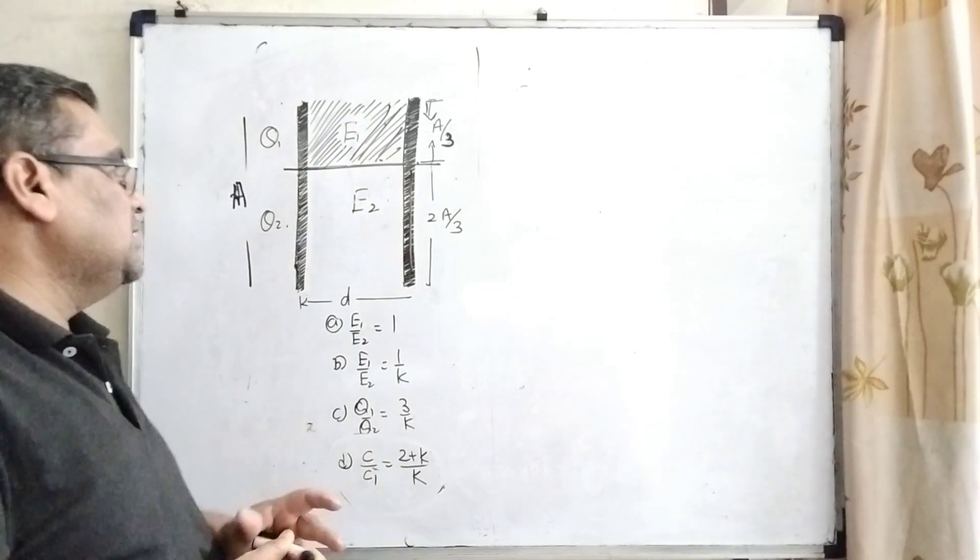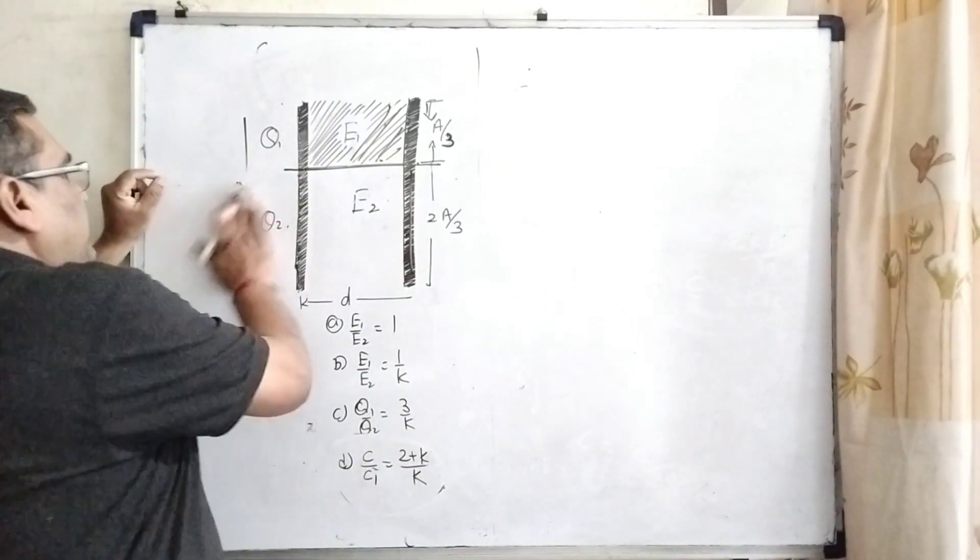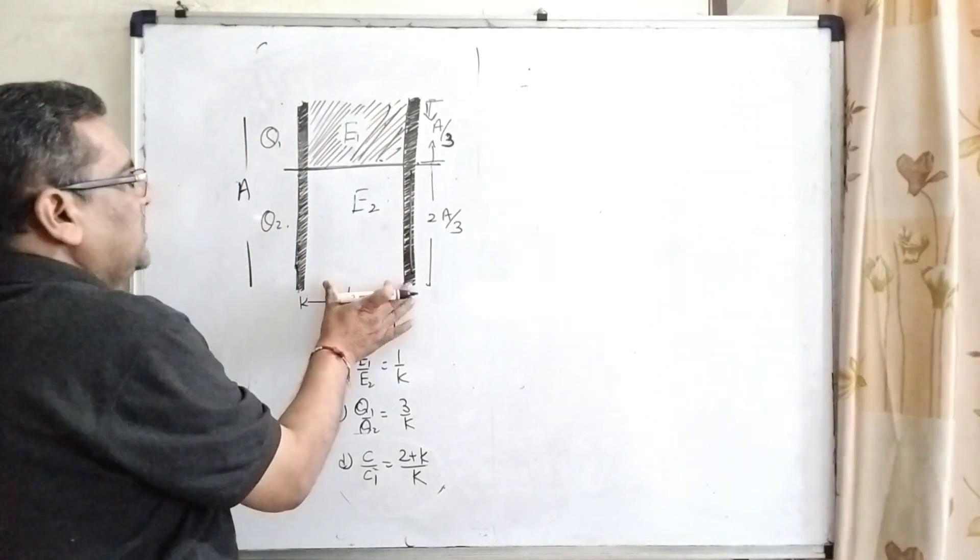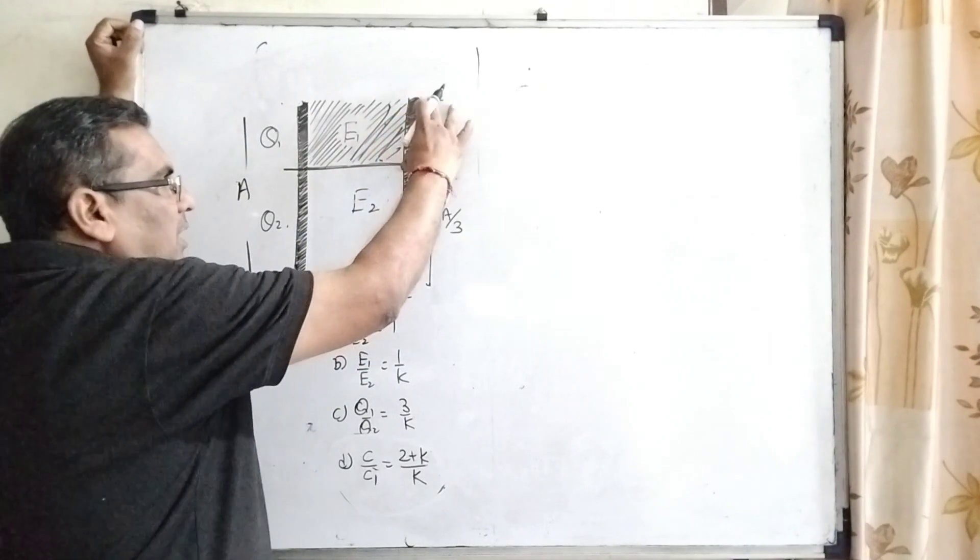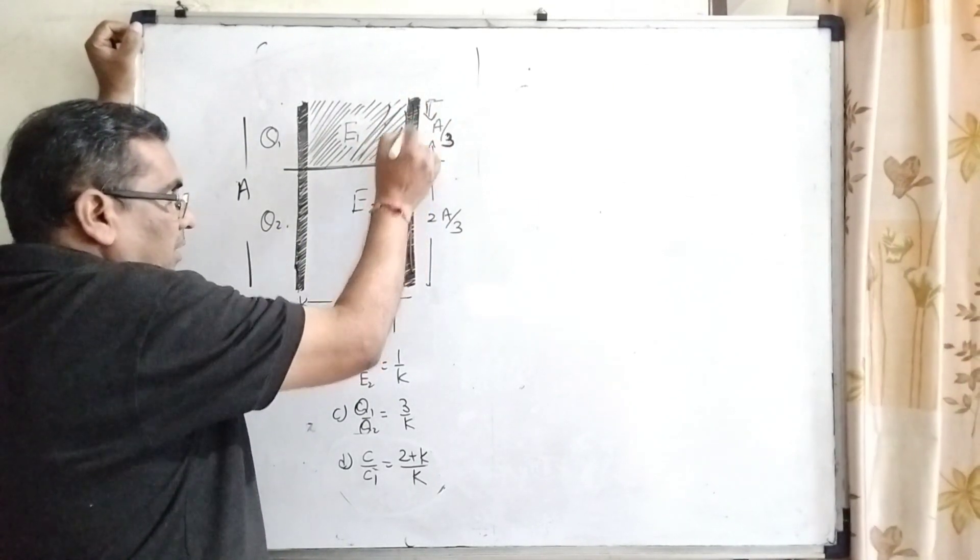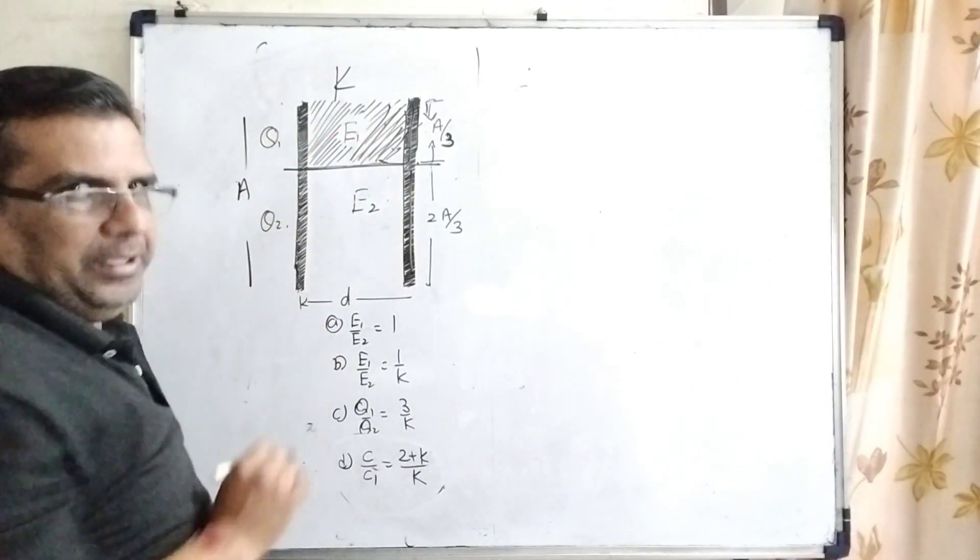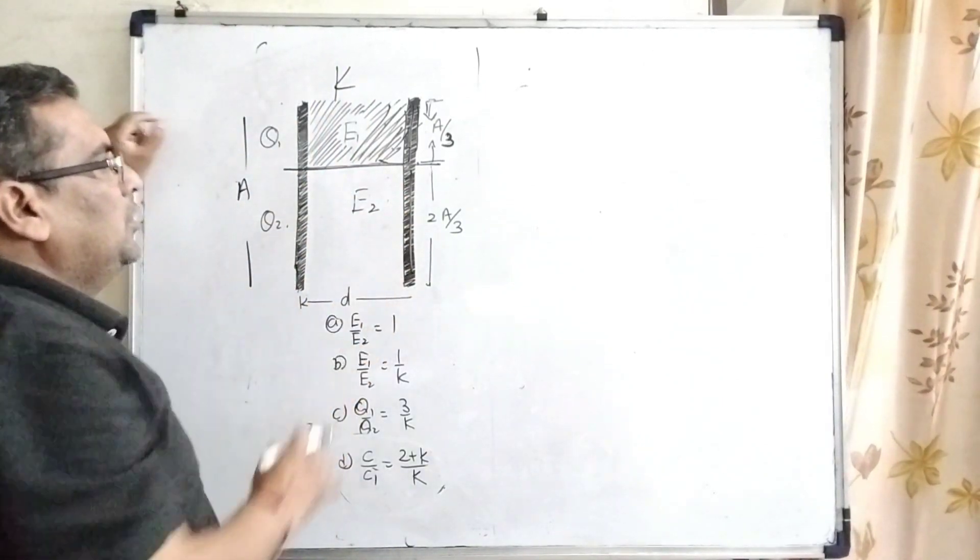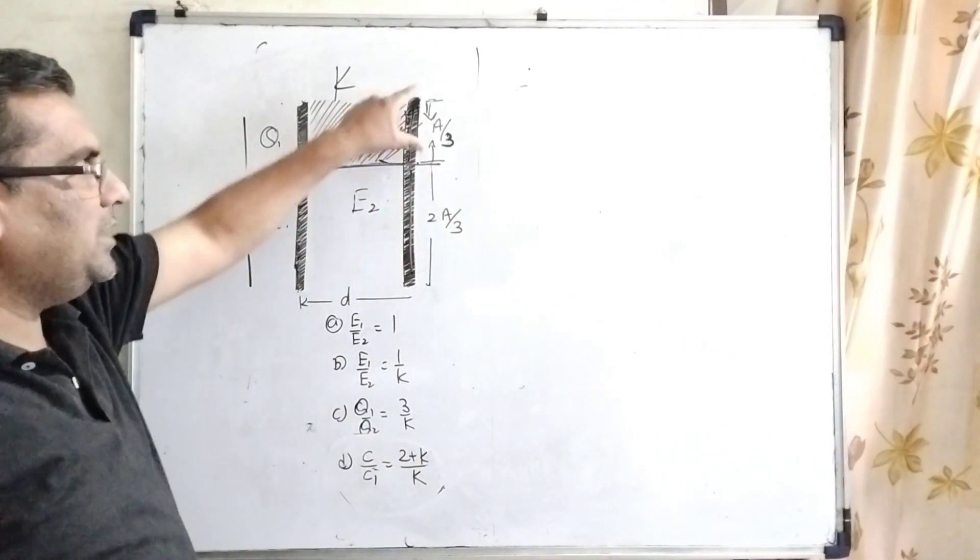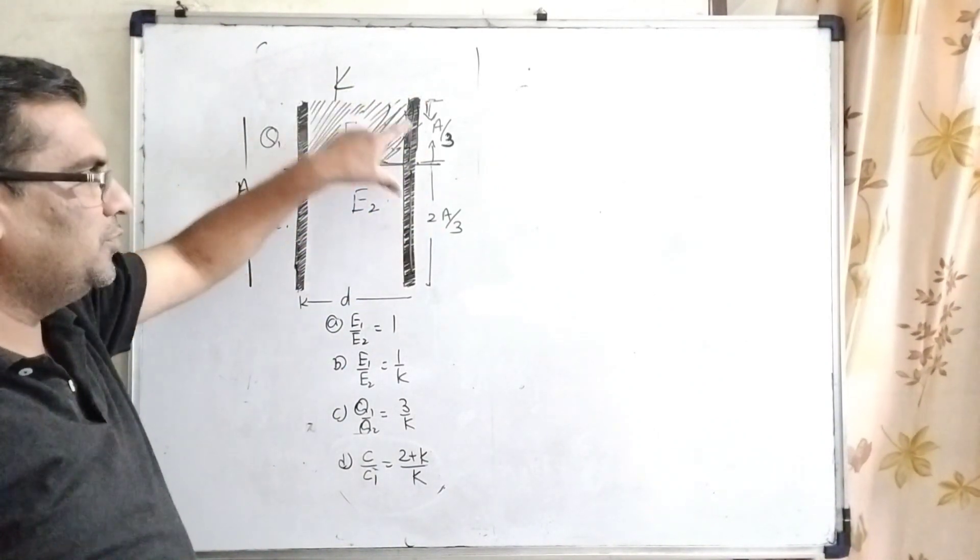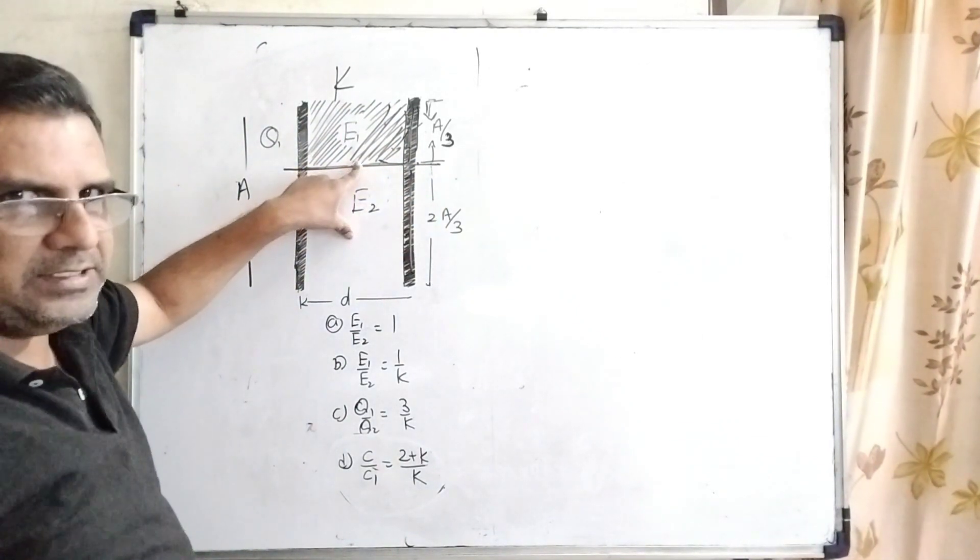Now let us consider the area of the plate is capital A and the distance is given as small d. Initially, the A by 3 part of the area of the plate is filled up with the dielectric constant K. And the remaining portion, what is the remaining portion? 2A by 3 because A by 3 we have used in the dielectric medium. So remaining portion is 2A by 3. Here 2A by 3 remains as it is, means air.